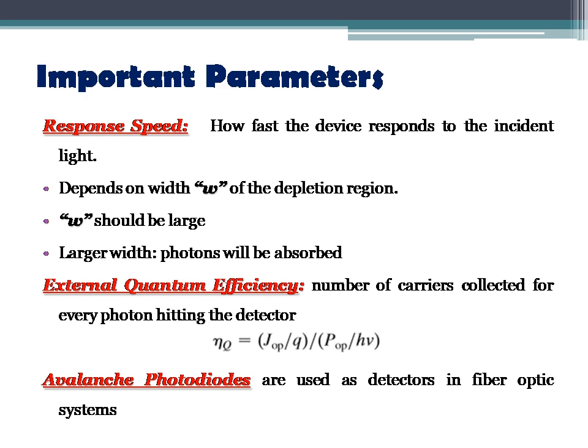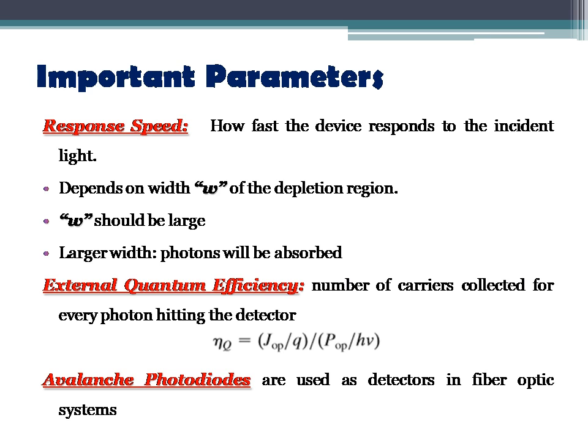When electron-hole pairs are created in the depletion region, an electric field sweeps electrons to the N side and holes to the P side. Since drift occurs in a very short time, the response speed is fast. Diodes where carrier multiplication takes place in the depletion region are also called depletion layer photodiodes. However, W should be approximately chosen — if W is very wide, most photons will be absorbed by the depletion region, increasing junction capacitance and sensitivity. If the width exceeds a certain value, the total time for carriers to drift out of the depletion region also increases.